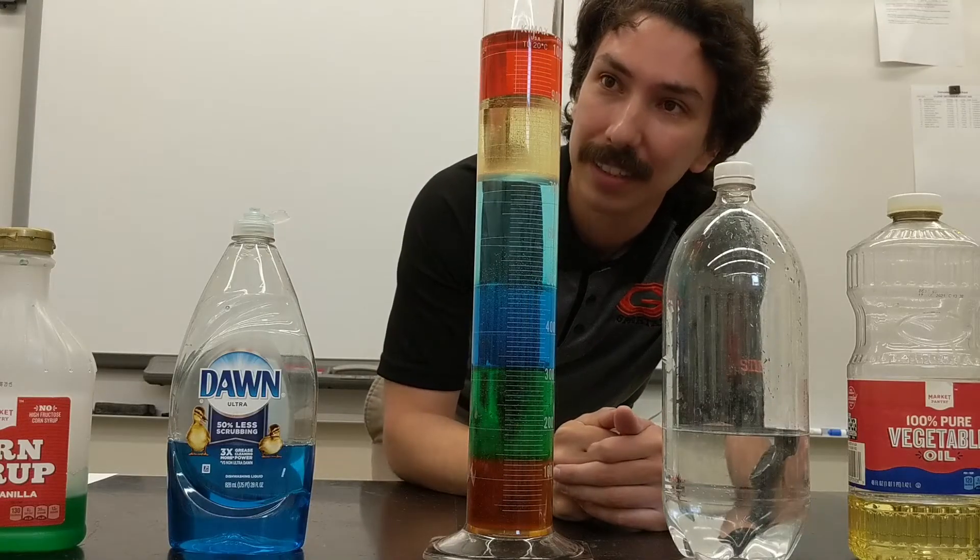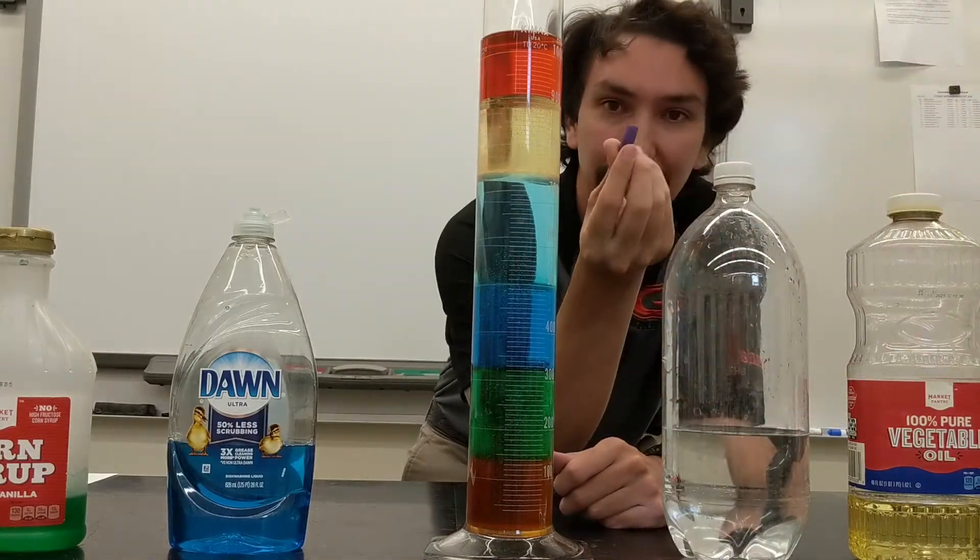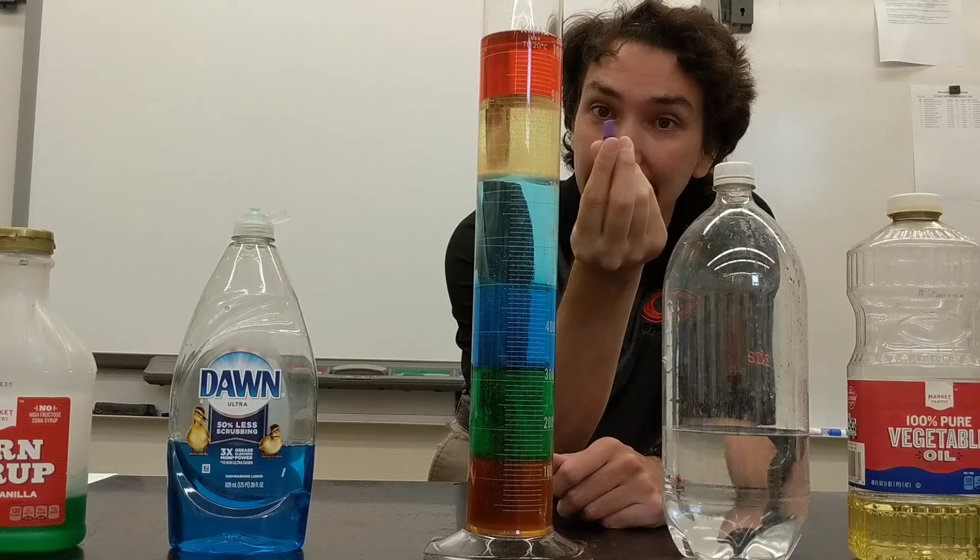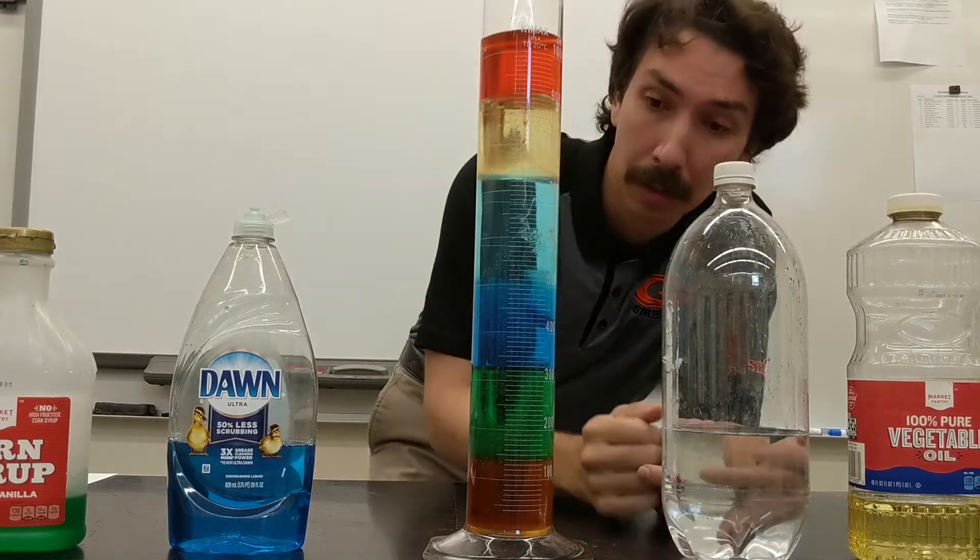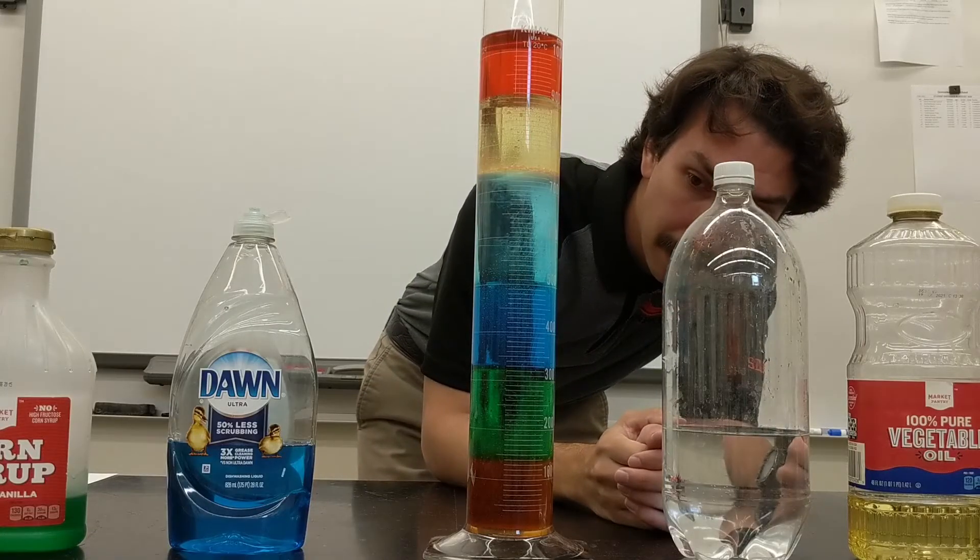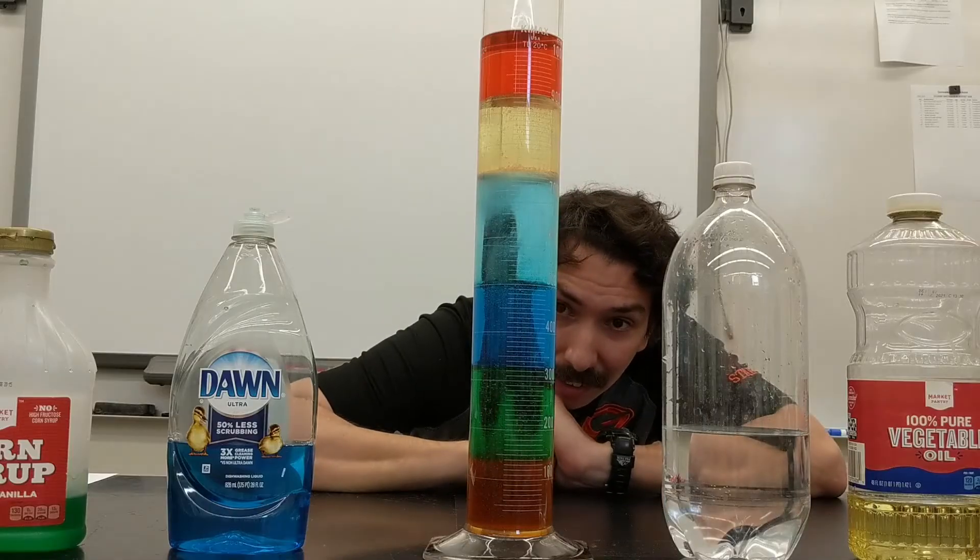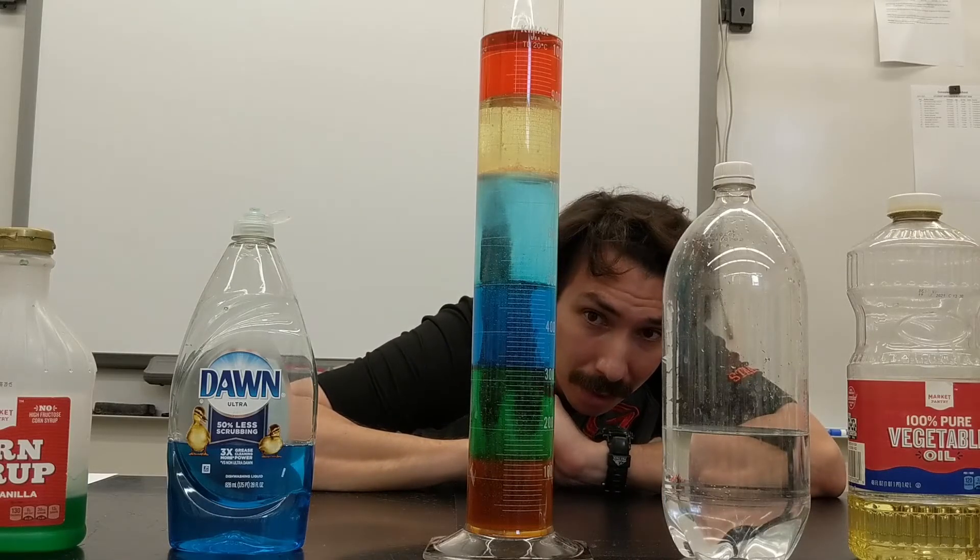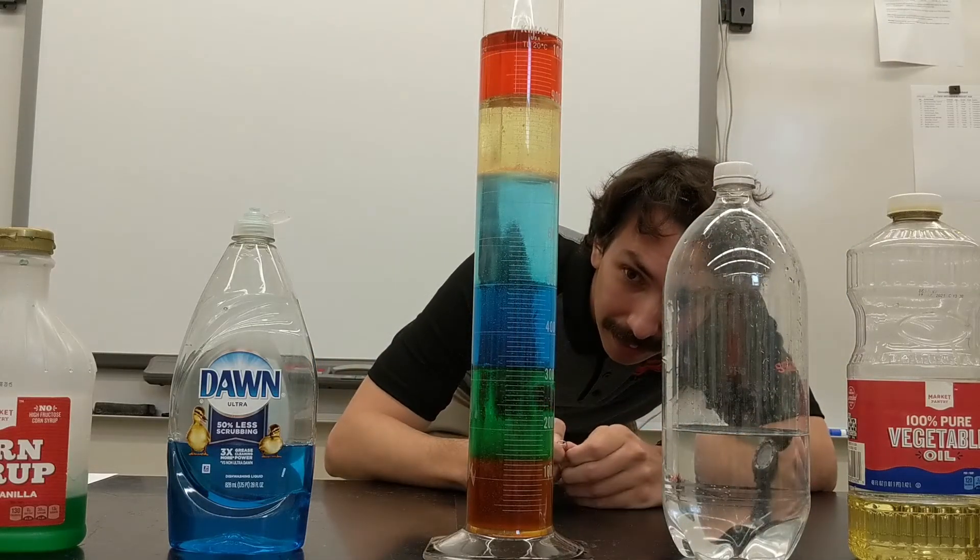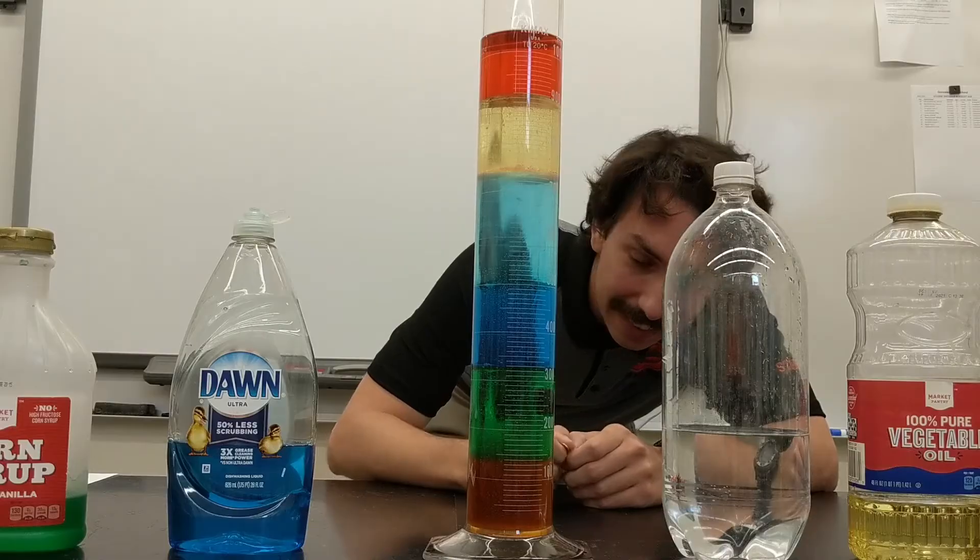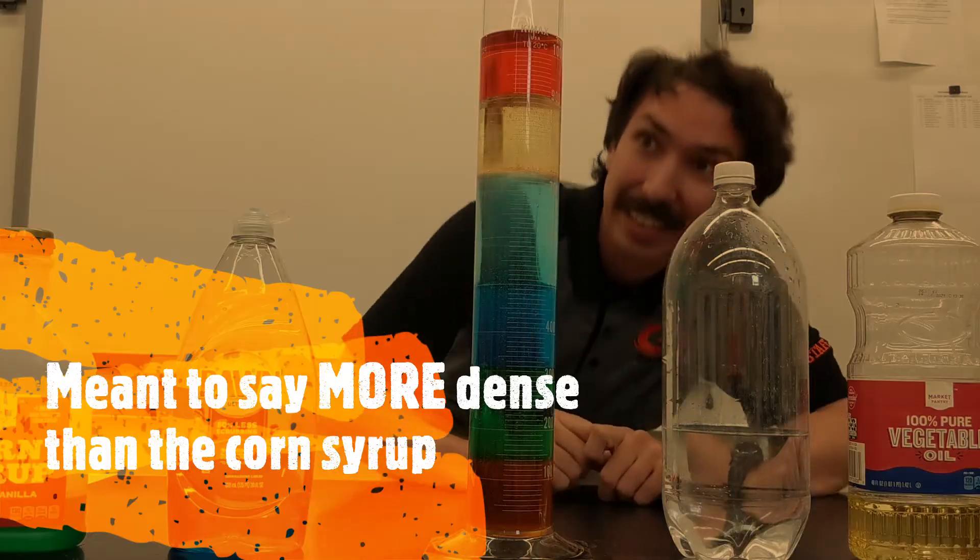All right. So our popsicle stick floats on our isopropyl alcohol. I got here, it's just a pencil eraser. So we'll see where this one goes. And it looks like it might be sinking through the corn syrup. So it's just a little bit less dense than the corn syrup. And we can keep an eye on that to see if it keeps sinking because it might even sink through the honey.